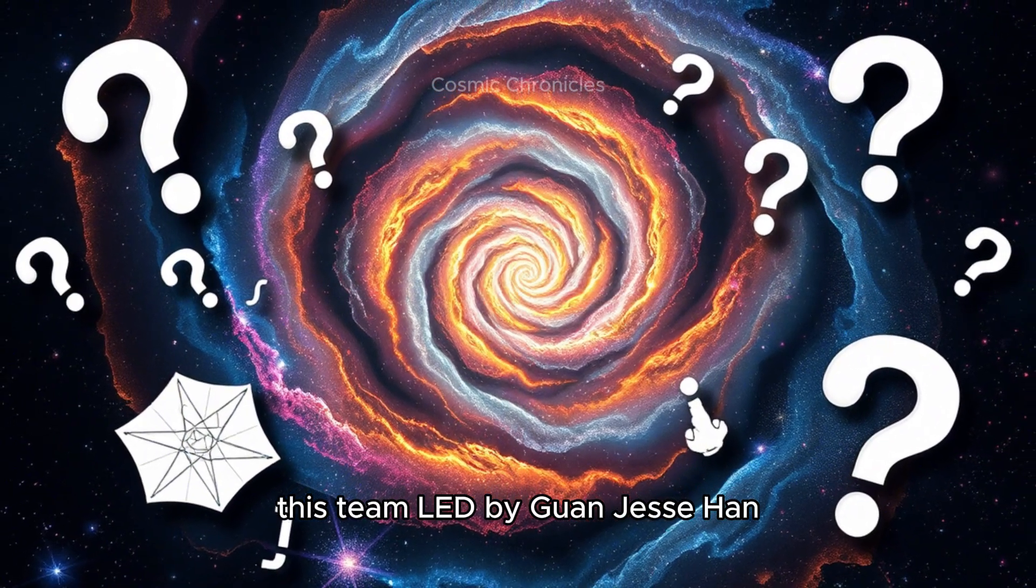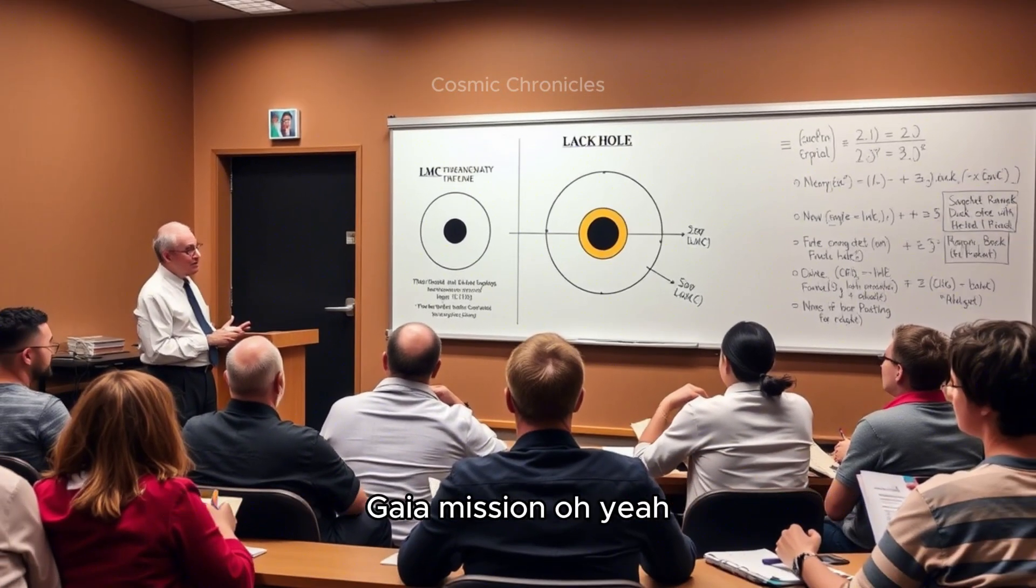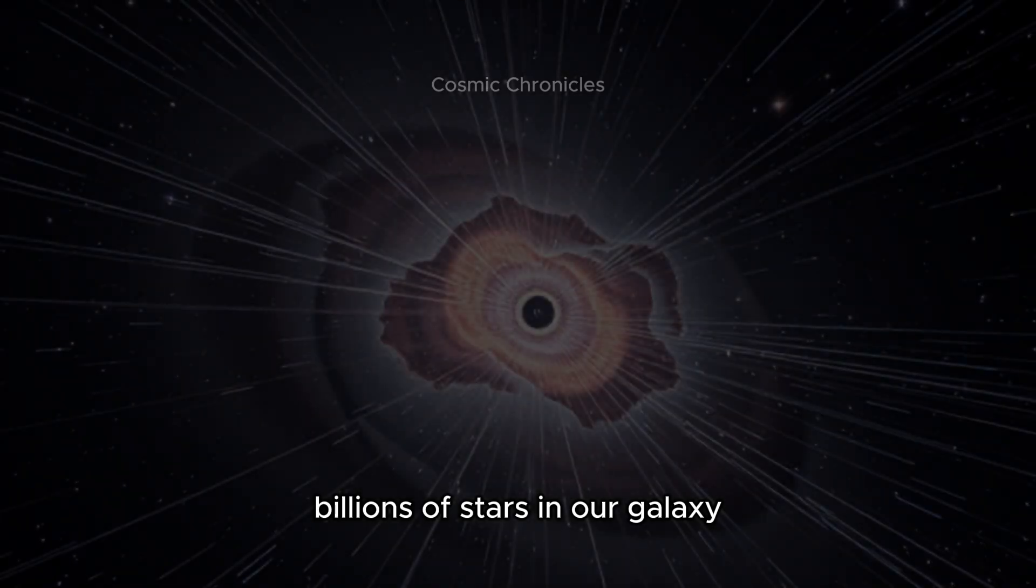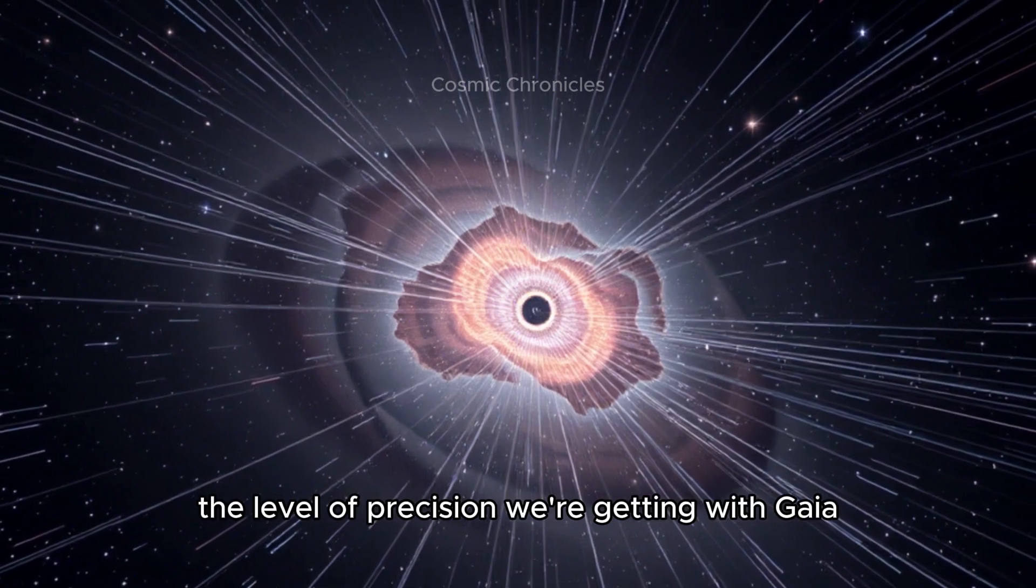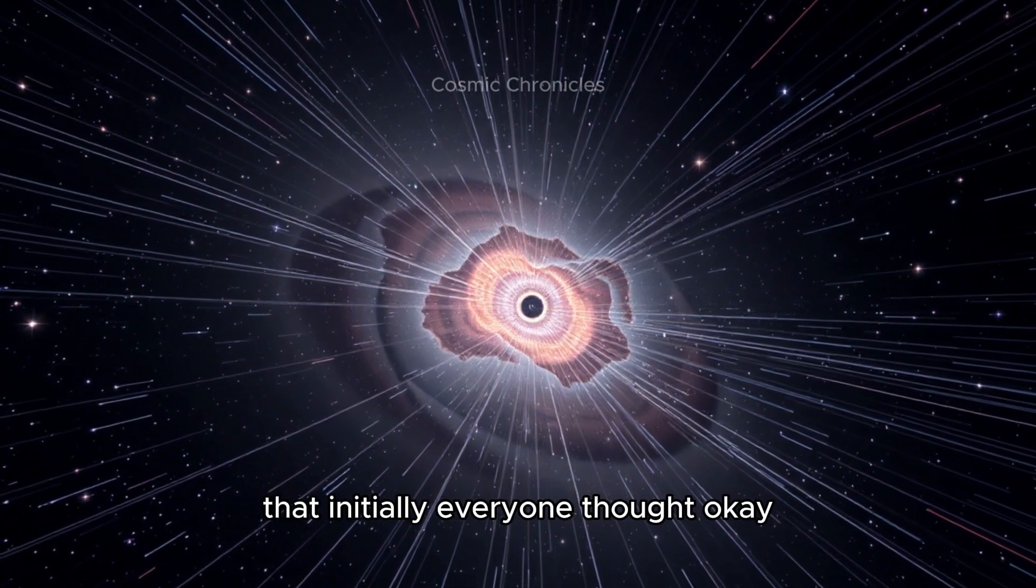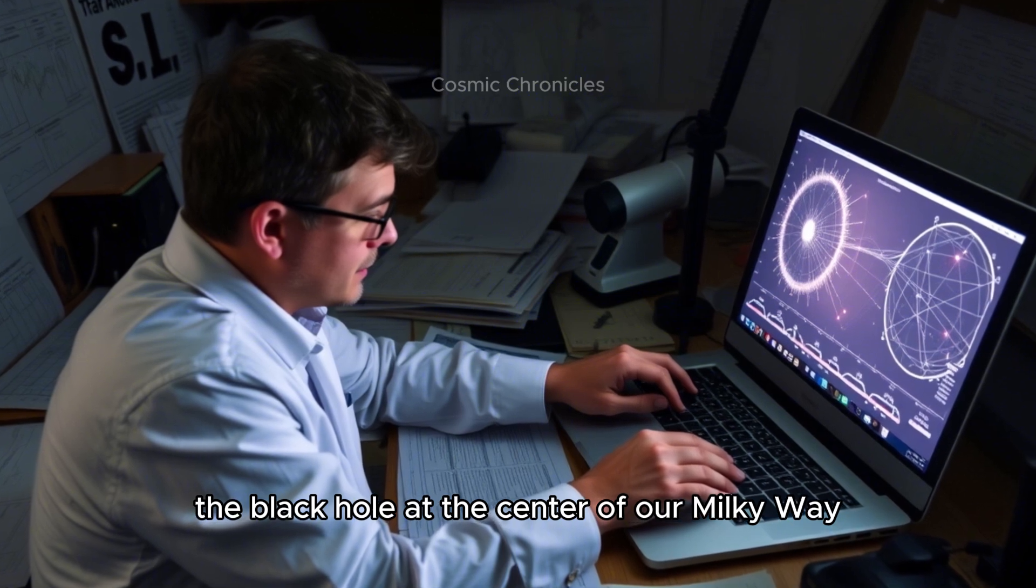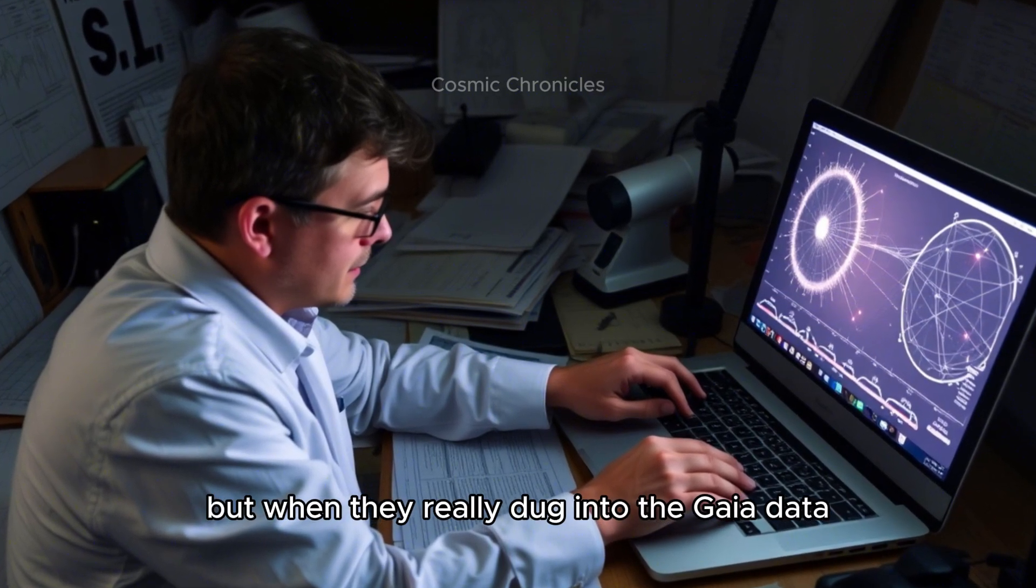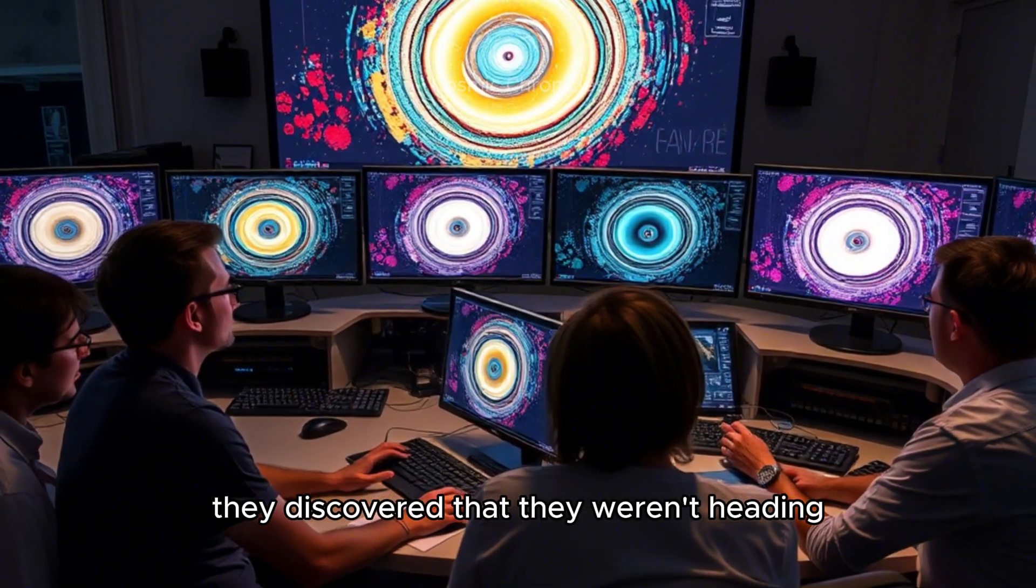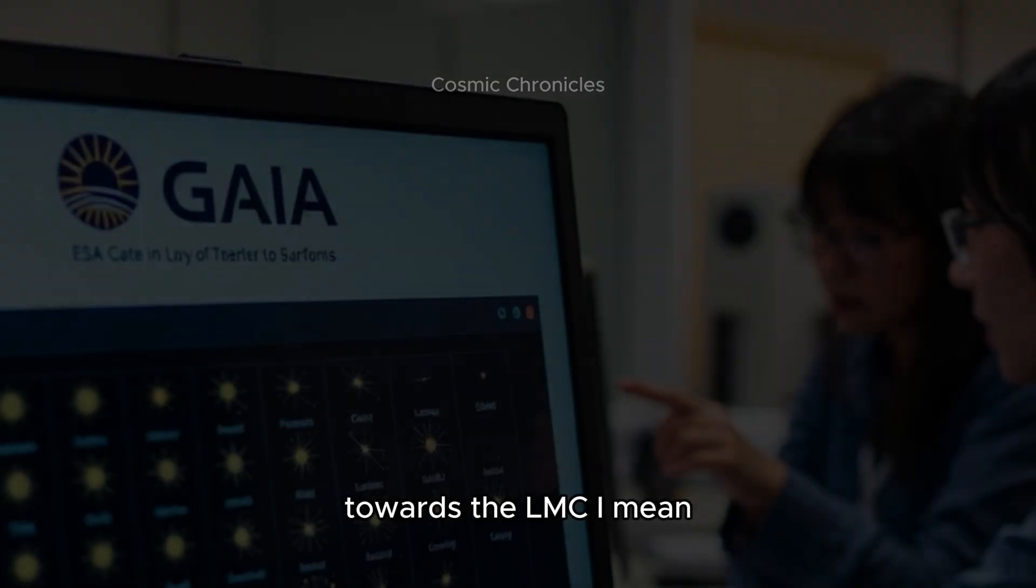If we see a bunch of these hyperfast stars and they're all pointing back to the LMC even though they're now in the Milky Way, that's a pretty strong indication that something big is going on over there. That's where this research from the Harvard Center for Astrophysics comes in. This team, led by Guan-Jesse Han, they've been using amazing data from the European Space Agency's Gaia mission - that's the one that's mapping the positions and movements of billions of stars in our galaxy. They focused on a set of 21 hypervelocity stars that initially everyone thought must have come from Sagittarius A*. But when they really dug into the Gaia data and traced these stars' movements backwards in time, they discovered that they weren't heading away from Sagittarius A* at all. Their paths were pointing in the opposite direction, towards the LMC.